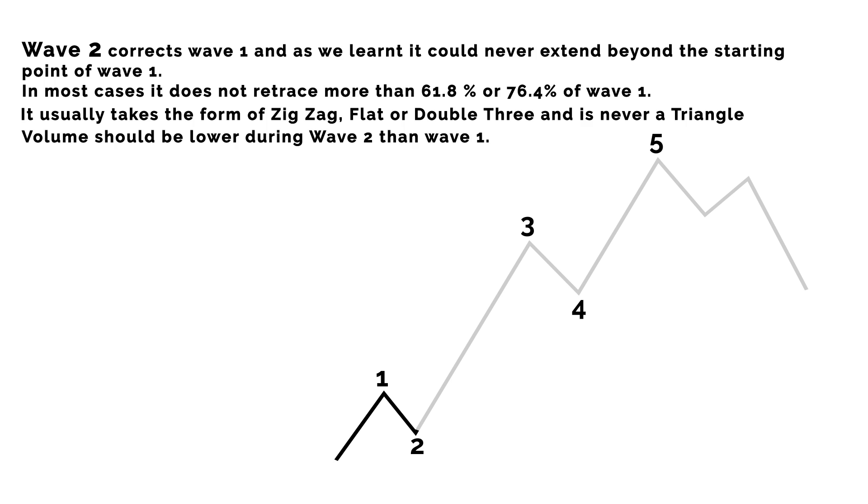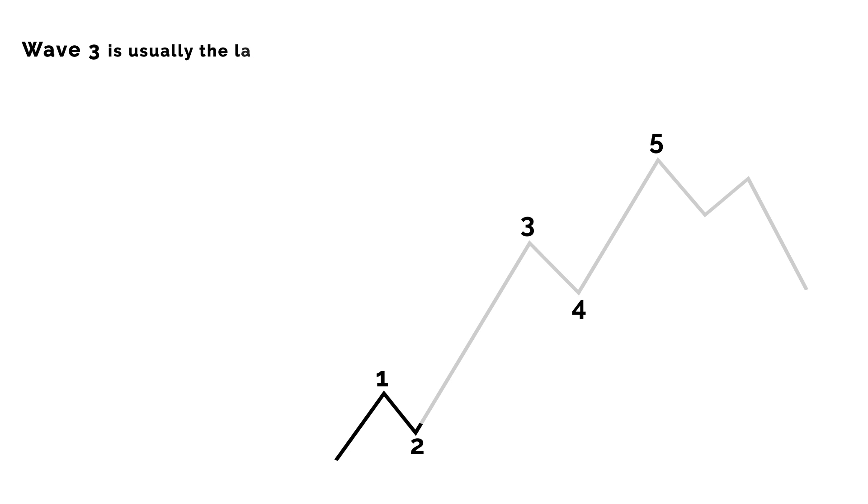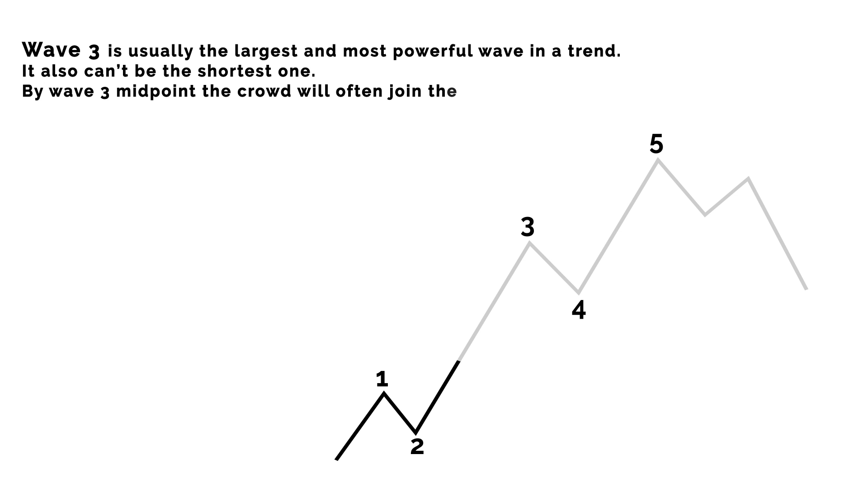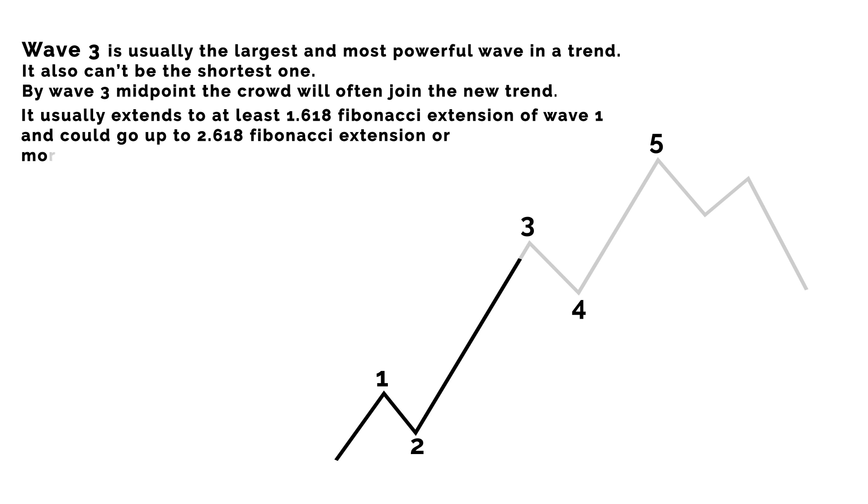Number 3, Wave 3. Wave 3 is usually the largest and most powerful wave in a trend. It also can't be the shortest one. By Wave 3 midpoint, the crowd will often join the new trend. It usually extends to at least 1.618 Fibonacci extension of Wave 1 and could go up to 2.618 Fibonacci extension or more. It is usually the extended wave in a 5-wave sequence.